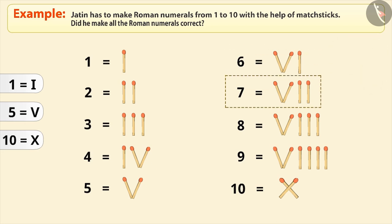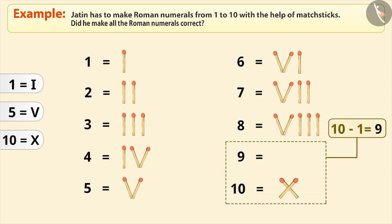Similarly, we write 7 and 8 as shown here. Now, writing 9 this way is incorrect. The correct method is by subtracting 1 from 10, which gives us this numeral.